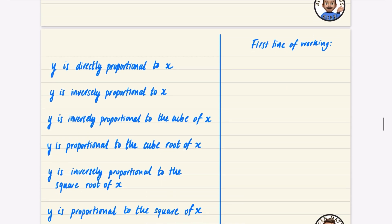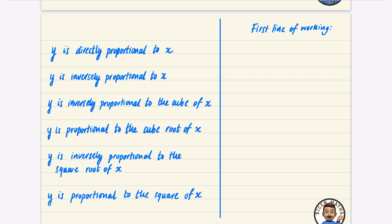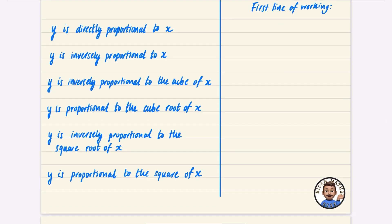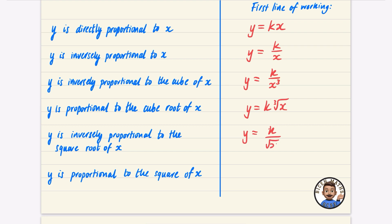Let's think about how to write the first line of working for different proportion types. If y is directly proportional to x we write y = kx. If it's inversely proportional, instead of k multiplied by x it's k divided by x. Inversely proportional to the cube of x gives k/x³. Y proportional to the cube root of x gives y = k·∛x. Y inversely proportional to the square root of x gives k/√x. Y proportional to the square of x gives k·x². The ones that say inverse have it as a fraction; the ones that say direct or just proportional have it as a multiplication.